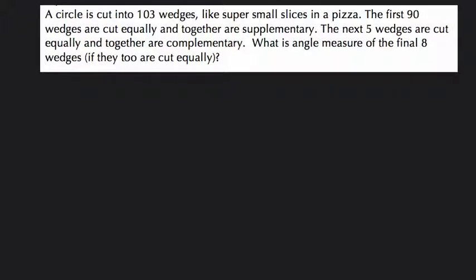In this problem, we're told that a circle is cut into 103 wedges, like super small slices in a pizza. The first 90 wedges are cut equally and together are supplementary. Supplementary means 180 degrees.